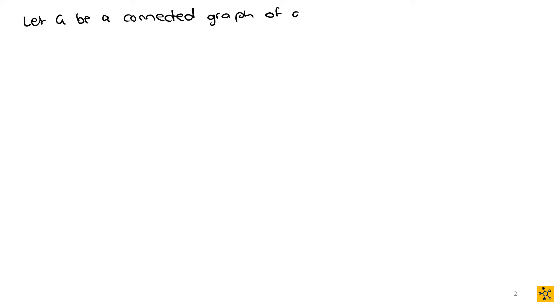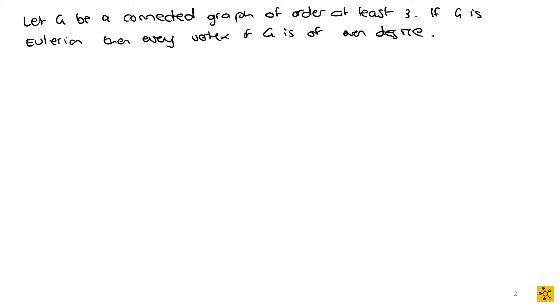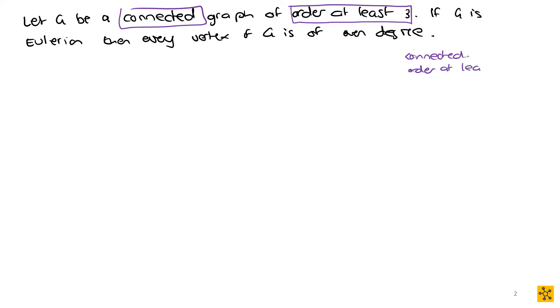The theorem we're looking at is: let G be a connected graph of order at least 3. If G is Eulerian, then every vertex of G is of even degree. Before we discuss why that works out, let's ask a few questions regarding why we need the conditions 'connected' and 'order at least 3' to discuss anything to do with Eulerian graphs.